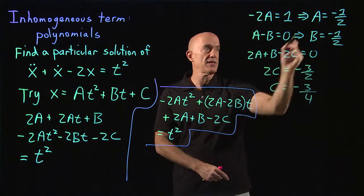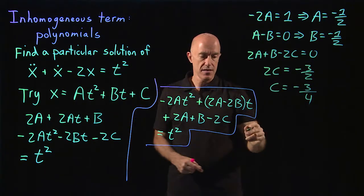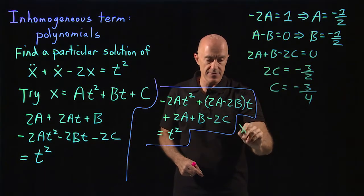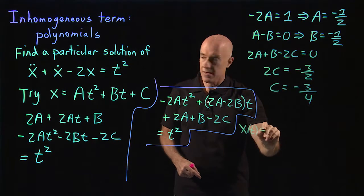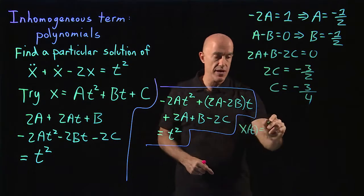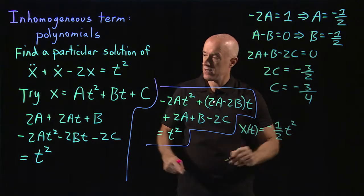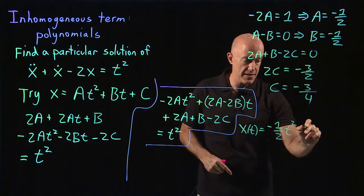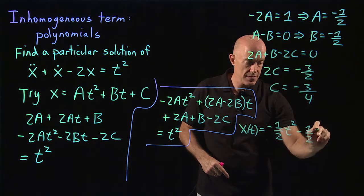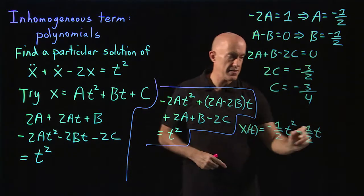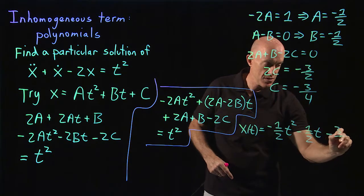So we found a, we found b, we found c. So then I can write down x of t is equal to at squared minus 1 half t squared plus bt minus 1 half t plus c minus 3 quarters.